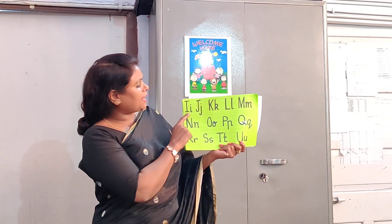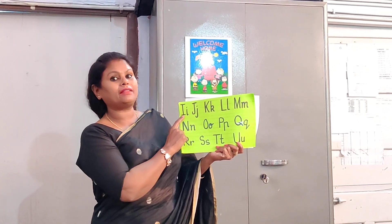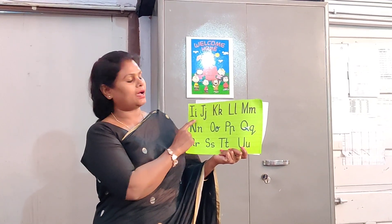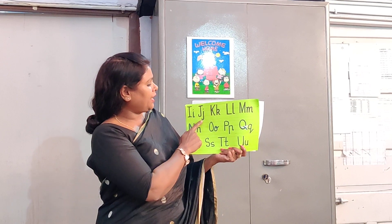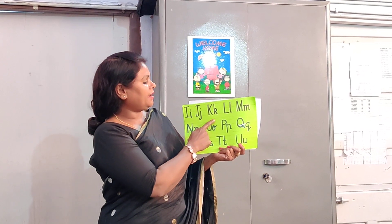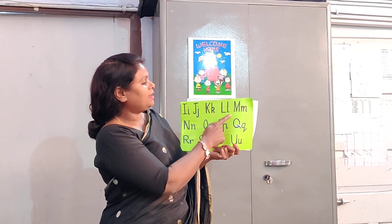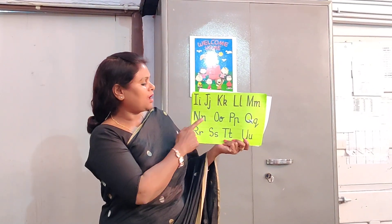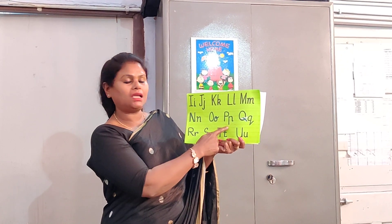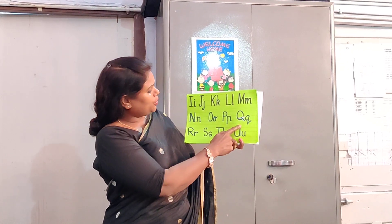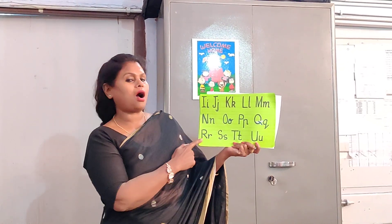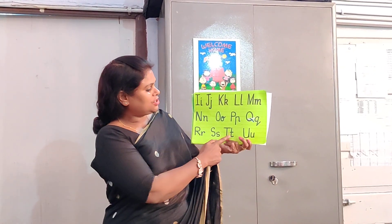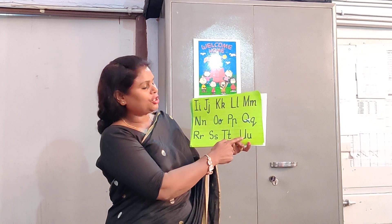So after H comes I. You write the capital and the small: I, J, K, L, M, N, O, P, Q, R, S, T, U.